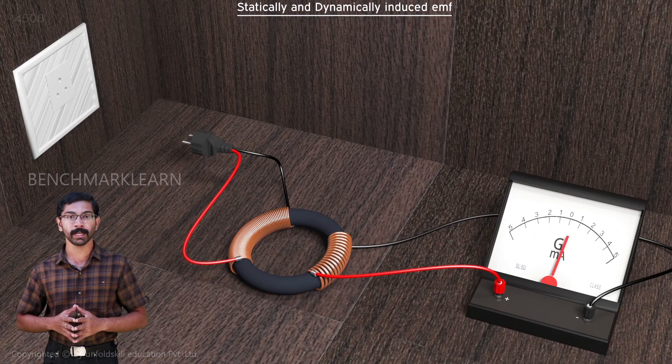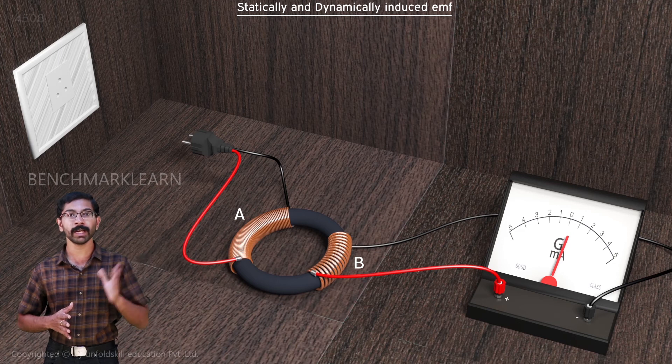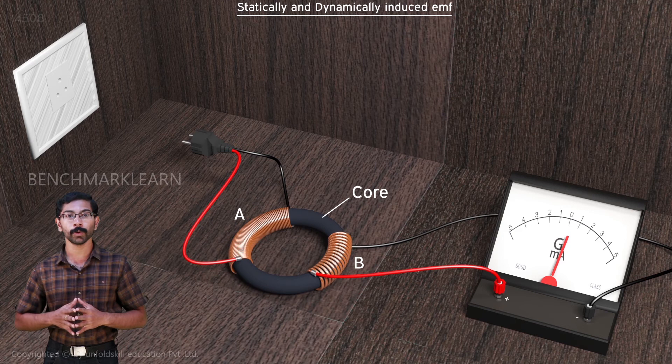In this experimental setup, we have two coils of insulated wire, coil A and coil B. They are wound around a ring-shaped iron piece called core. We use an iron core because iron allows magnetic flux to pass through it more easily than air.